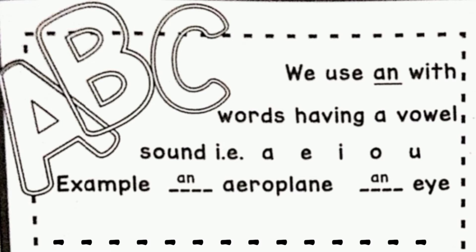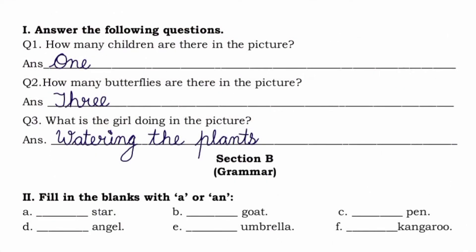So just like this, a few more words are given and you have to fill in 'a' or 'an'. The first word is 'star' — we will use 'a', because the first sound is a consonant sound. The next word is 'goat' — we will use 'a' again, so the answer is 'a goat'. The next word is 'pen' — the answer will be 'a pen'.